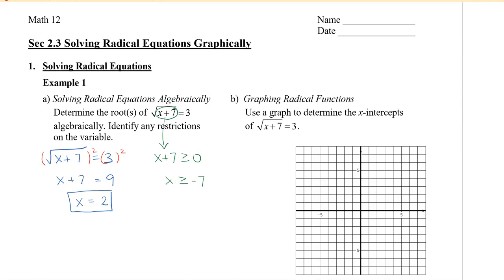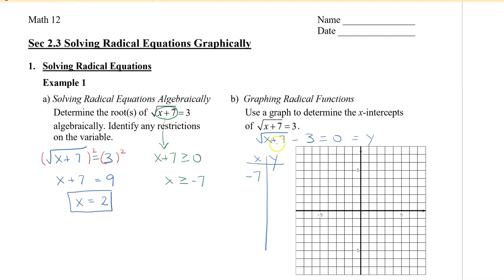So now let's go to the graph. I'm going to rewrite the equation by moving the 3 to the left side and then setting it equal to 0, which is similar to setting it equal to y. I'm going to draw a table of values and start with the value that makes my radical equal to 0, so the x value would be negative 7. If I plug in negative 7, I get 0 minus 3, which gives me negative 3 for my y value.